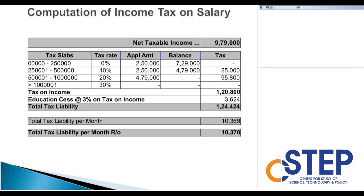Any more questions? A participant asked about tax saving methods other than LIC and NSC. Other options mentioned include ELSS mutual funds and other instruments covered under the listed sections.